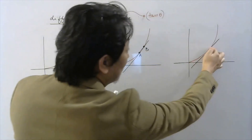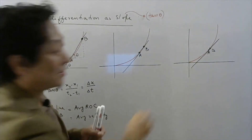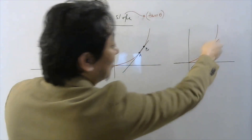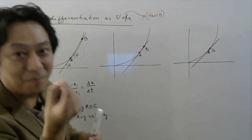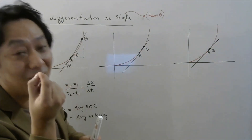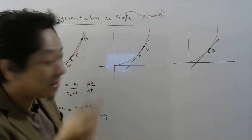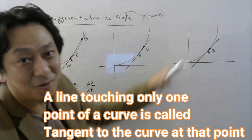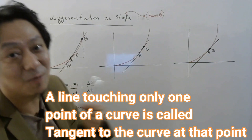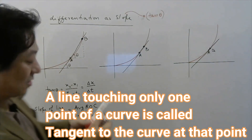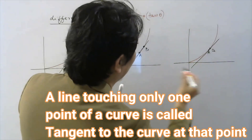So when this second point comes very close to the first point, the line joining the two points is like joining only one point. And when a line joins only one point to the graph, that line is what we call a tangent.